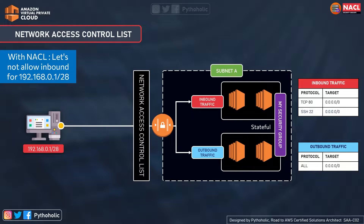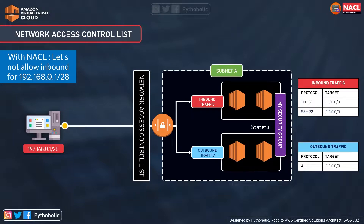Let's suppose we have a target and we want to restrict it from a list of 6 subnets, which could be more than 25 security groups. So how will you restrict all that in one shot? Yes, by using a Network Access Control List. So let's understand more about that.